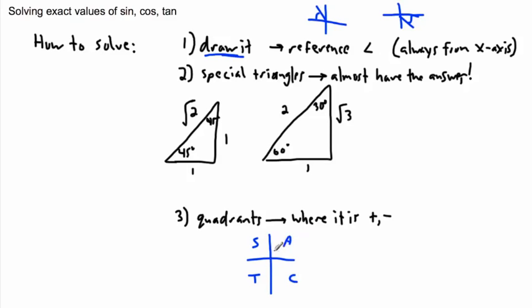Remember: if it's in the first quadrant, sine, cosine, and tangent are all positive. If it's in the second quadrant, only sine is positive. If it's in the third, only tangent is positive. If it's in the fourth, only cosine is positive. I use those to finalize the answer. So: first draw it, then do special triangles, then look at quadrants.